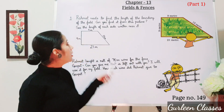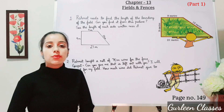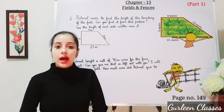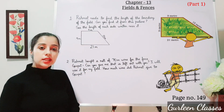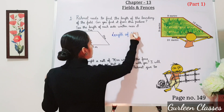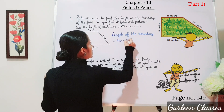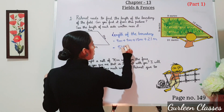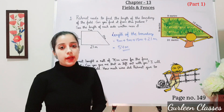Question number one: Rehmat needs to find the length of the boundary of the field. Can you find it from this picture? The length of the boundary is the perimeter, meaning the total length of the boundary of the object. We just have to add all the sides. Length of boundary equals 9 metres plus 9 metres plus 15 metres plus 21 metres, which is 54 metres. So the length of the boundary is 54 metres.